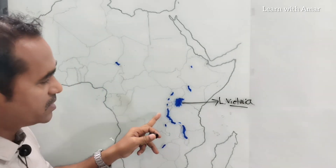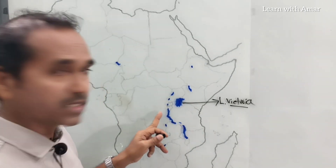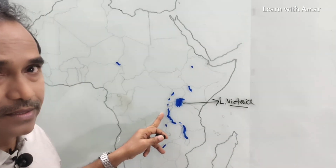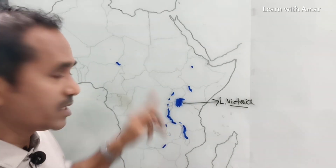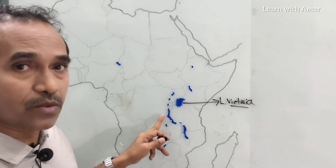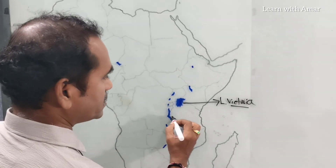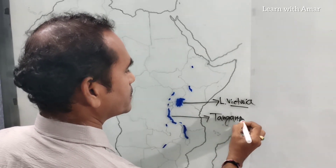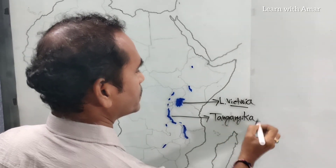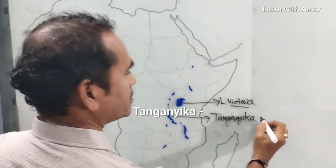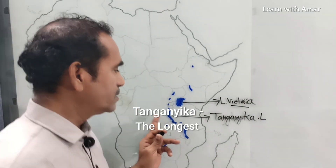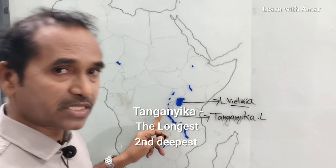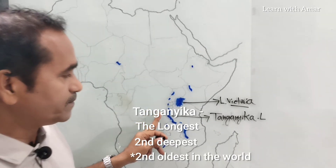This is the longest lake in the world. It is the second deepest lake after Lake Baikal in Russia, and it is also the oldest lake in the world. You know what is this? This is Lake Tanganyika. Lake Tanganyika is the longest one in the world, second deepest and the oldest in the world.